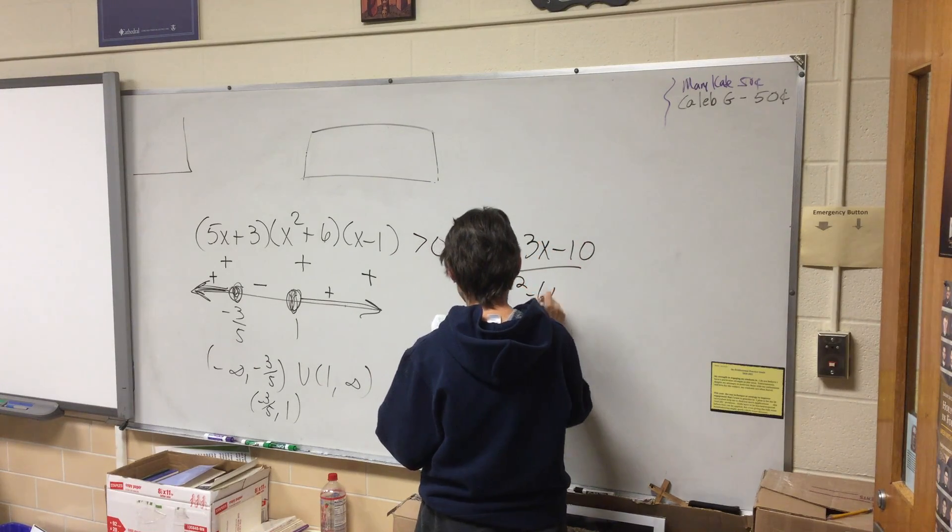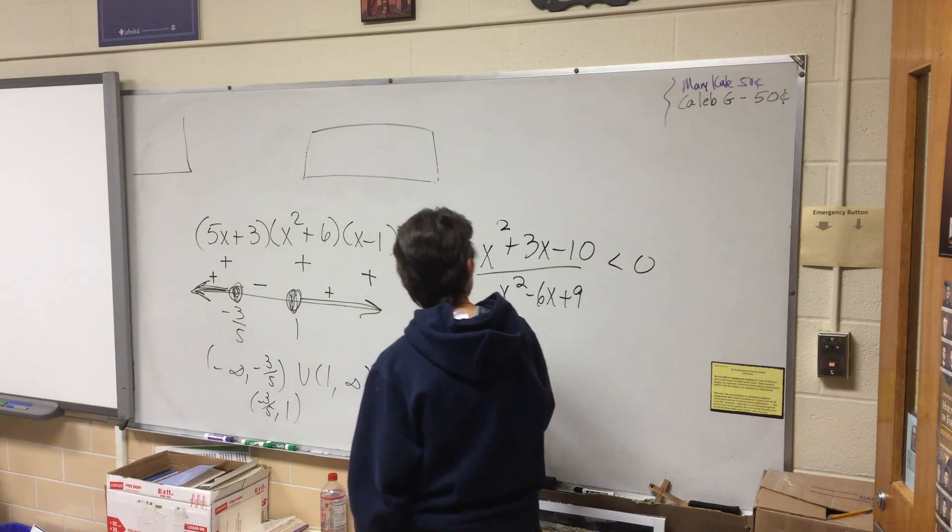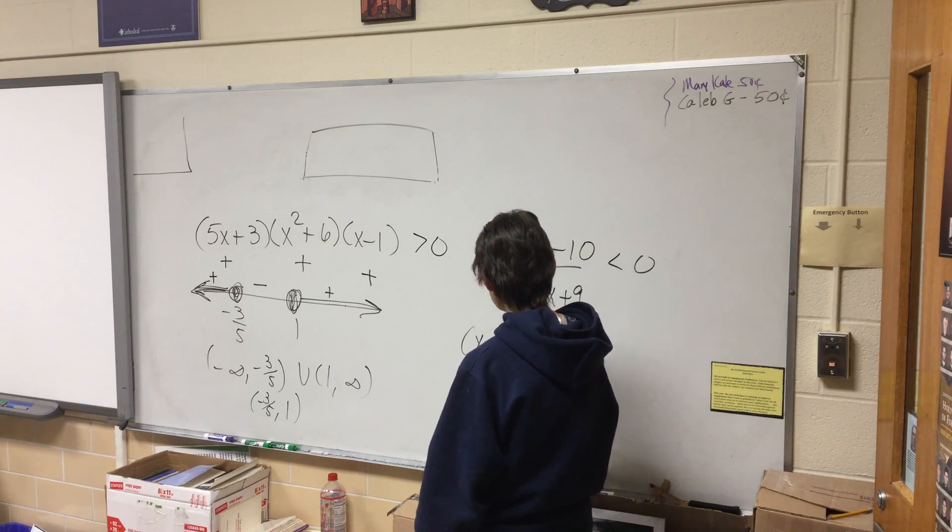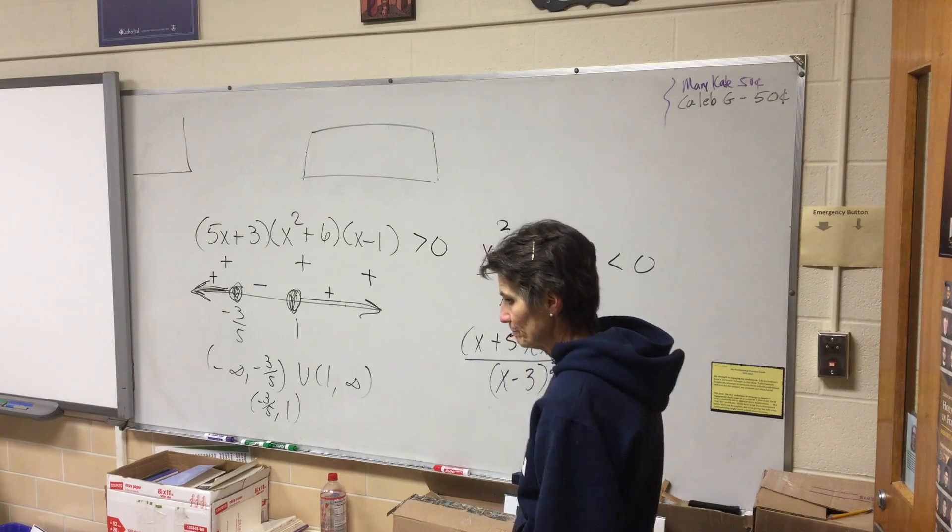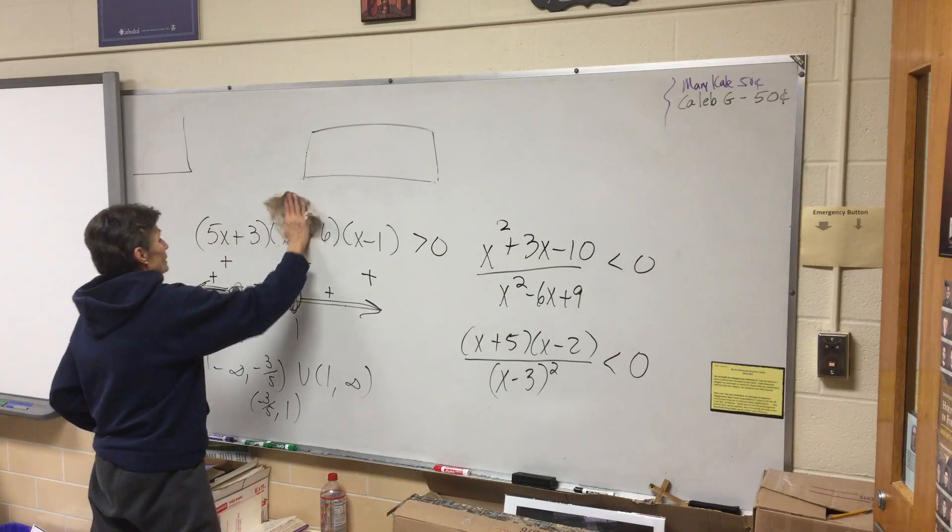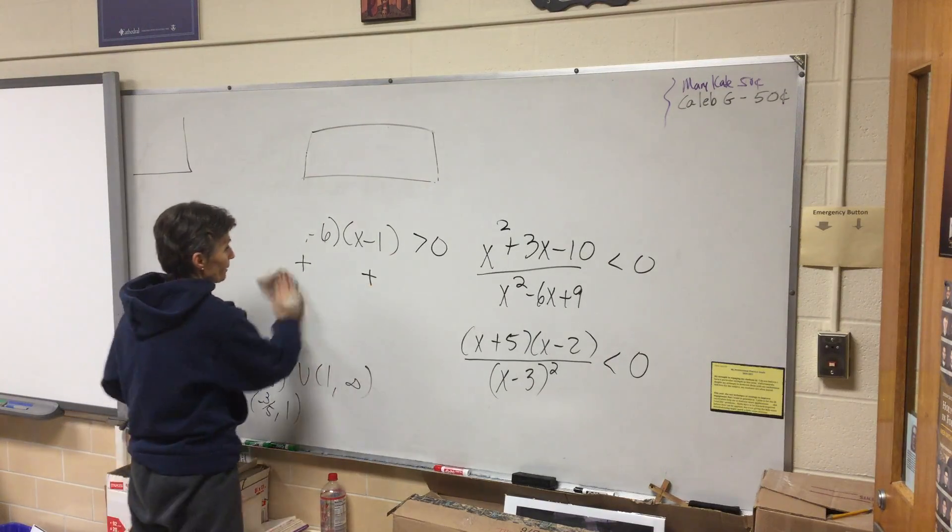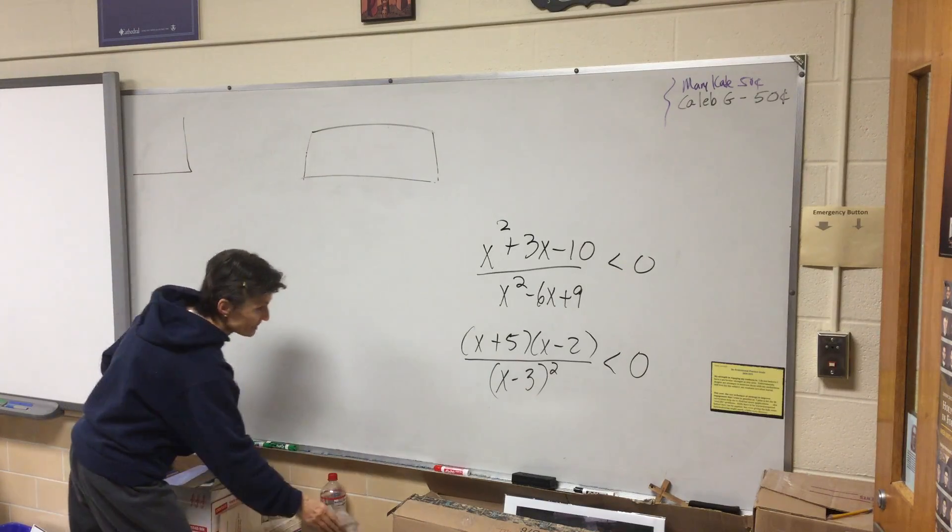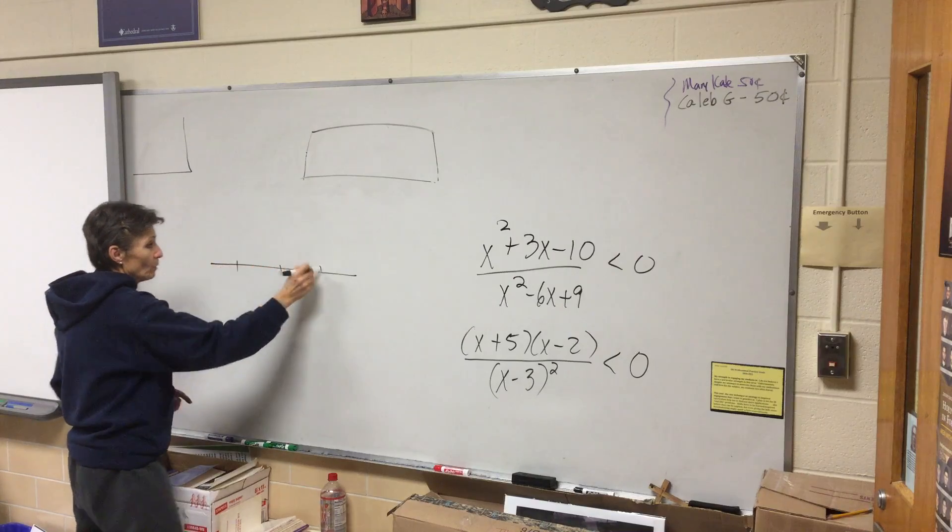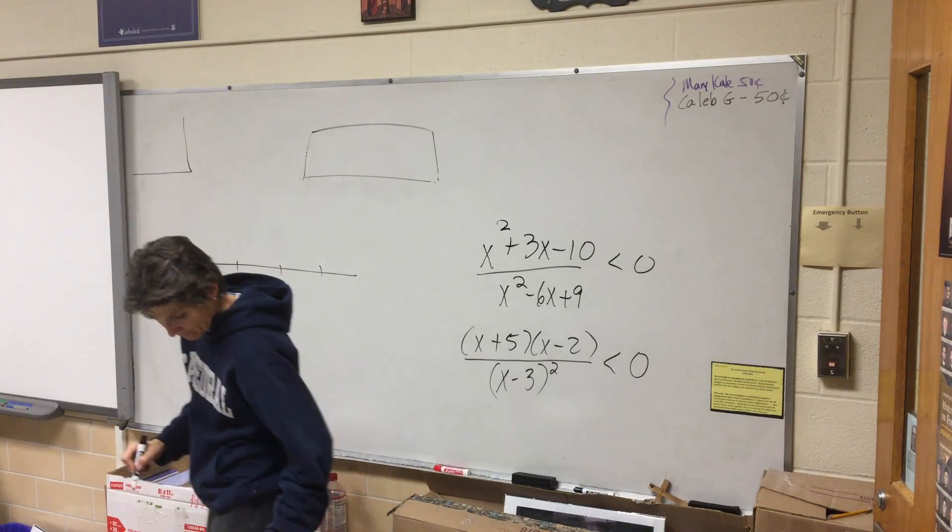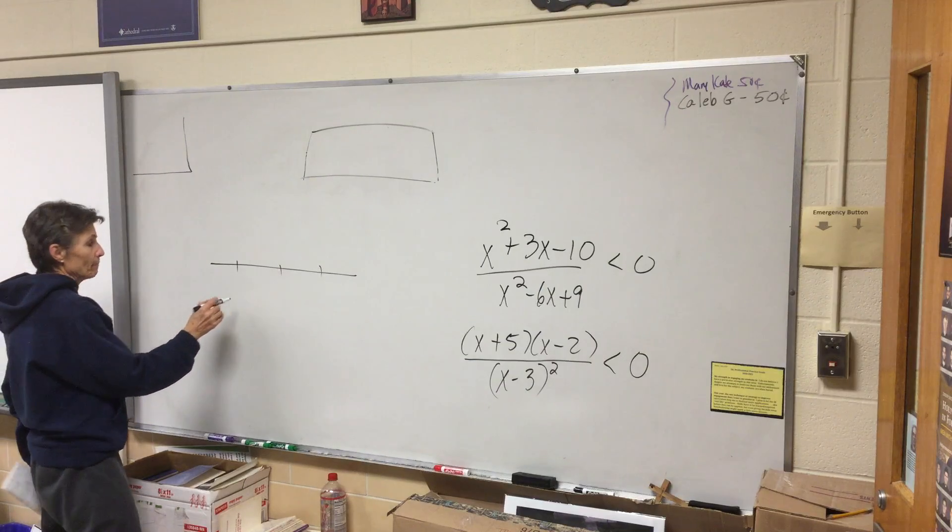What are you doing with the next one? x plus 5 over x minus 2 squared times x minus 3. We got a problem on the bottom because the bottom is squared. And that means there's no shortcut here. So we are not going to be able to do this with any kind of shortcut. Where will my dots be? Negative five, two, and three.